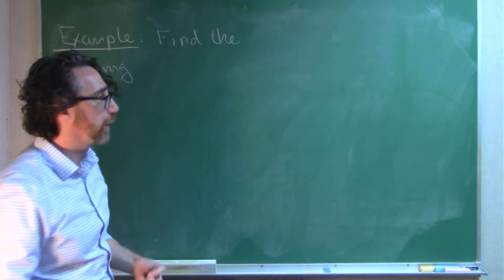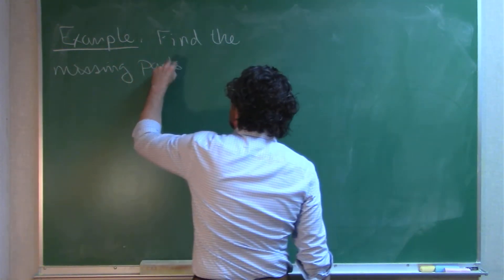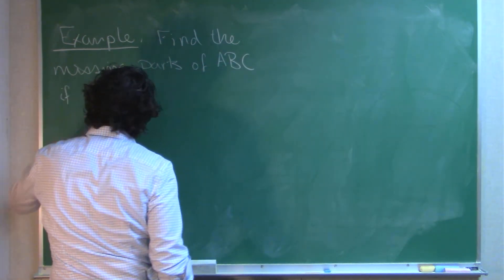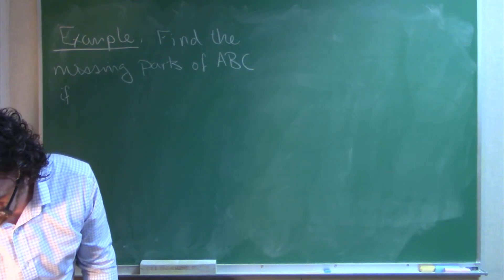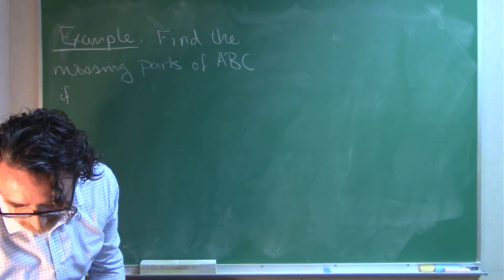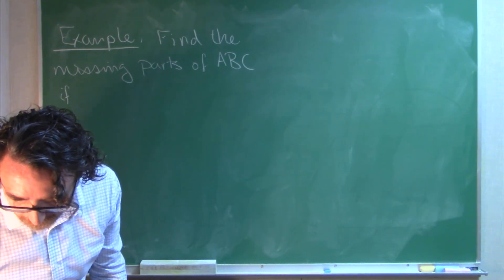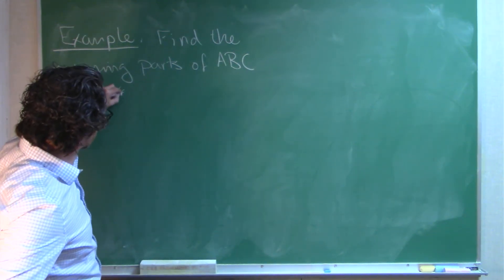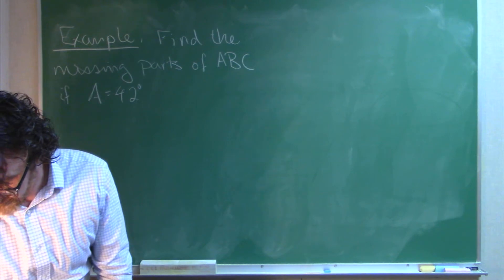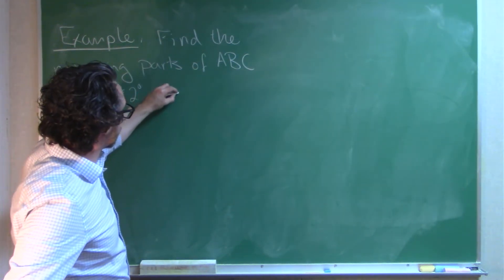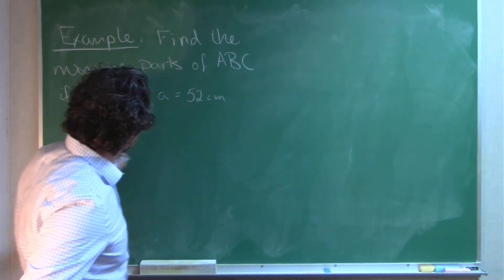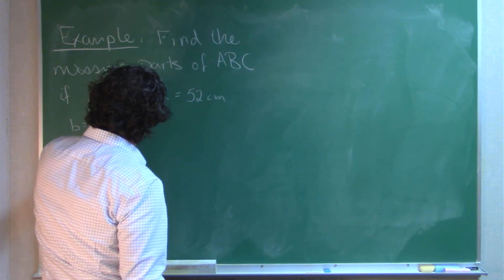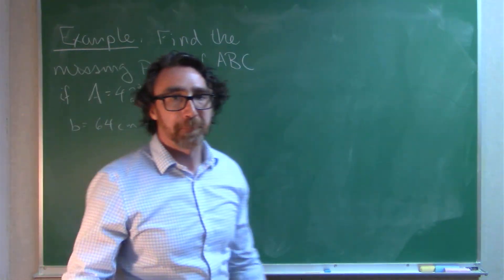So, here's my example. Find the missing parts of triangle ABC if, and what do I want to do here? Okay, let's do this one. A is 42, angle A is 42 degrees, side A is 52 centimeters, and side B is 64 centimeters.